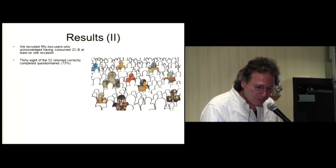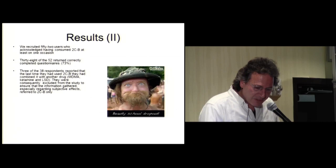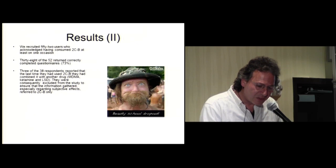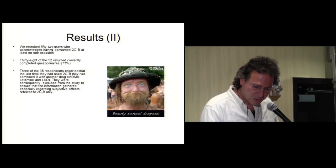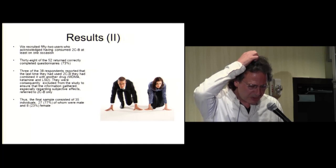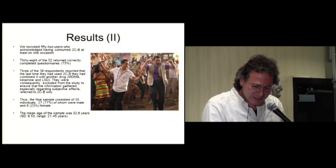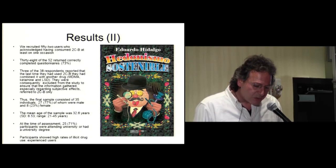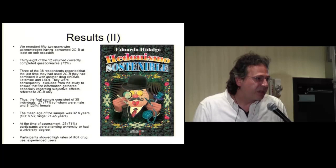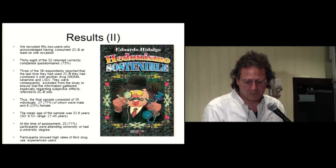The principal results: we recruited 52 users who had consumed 2CB at least on one occasion. 38 of the 52 returned correctly completed questionnaires. Three of the 38 responders reported that the last time they had used 2CB, they had combined it with another drug: MDMA, ketamine, and LSD. They were consequently excluded from the study to ensure that the information gathered, especially regarding subjective effects, referred to 2CB only. Thus, the final sample consisted of 35 individuals, 27 of whom were male and 8 female. The mean age of the sample was 32 years. At the time of the assessment, 25 participants were attending university or had a university degree, and participants showed high rates of illicit drug use. They were quite experienced users so they were quite qualified to assess the subjective effects of different compounds.